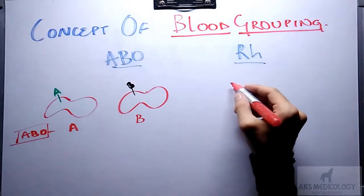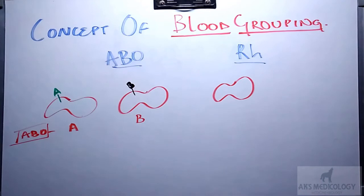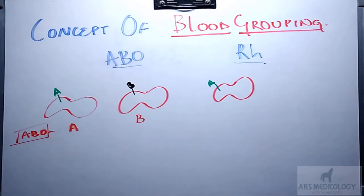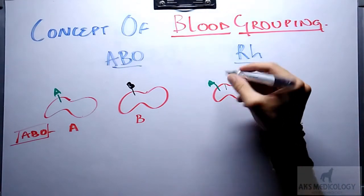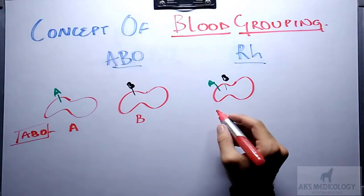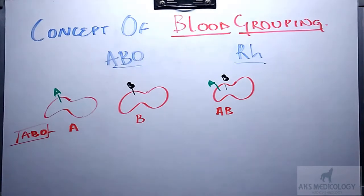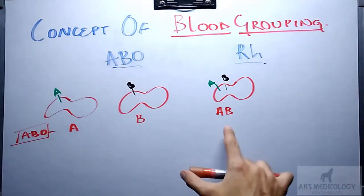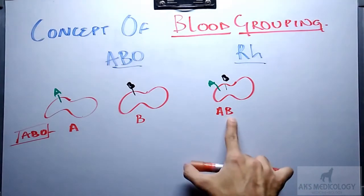Now, an individual with both antigen A and antigen B present over the RBC surface would have blood group AB. This is possible because of the law of co-dominance. ABO blood grouping follows the law of co-dominance — that is, A and B are both dominant and neither is recessive, so both are expressed.